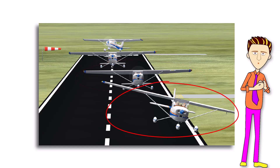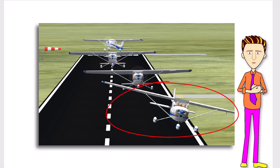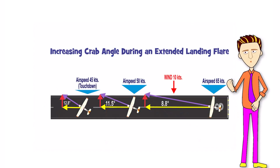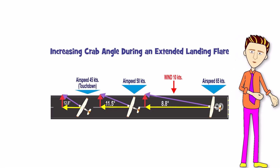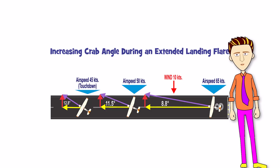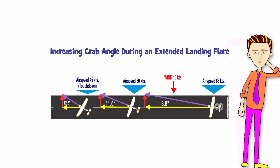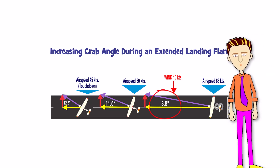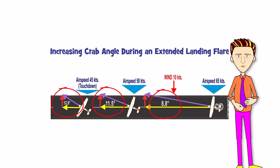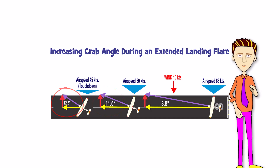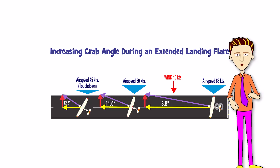If you don't touch down immediately after removing the crab angle, you'll begin to drift. If that happens, you'll add a sideways component of force to the landing gear upon touchdown — which, for reasons already stated, is something you want to avoid. Technically speaking, if you stretch out the landing flare — either because your approach speed is too high or because you are attempting a soft-field landing — you'll also have to increase the crab angle during the landing flare.